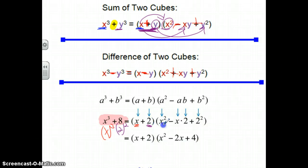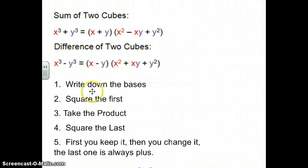So you write down the two bases, you square the first base so x squared, you take the product of the bases. Well the product of the first base is x, the second base is 2, so the product of the bases is 2x. And then you square the last, and squaring the last 2 gives you this 4 down here. So the rule is: write down the bases, square the first, take the product, square the last. First you keep this sign plus which they did, then you change it, and the last one's always plus. So once again, the rule is you write down the bases, you square the first, take the product, square the last. First you keep the sign, then you change the sign, and the last one's always plus.